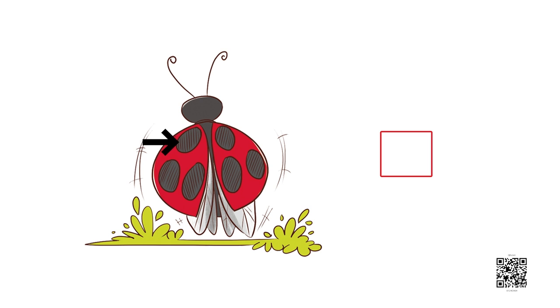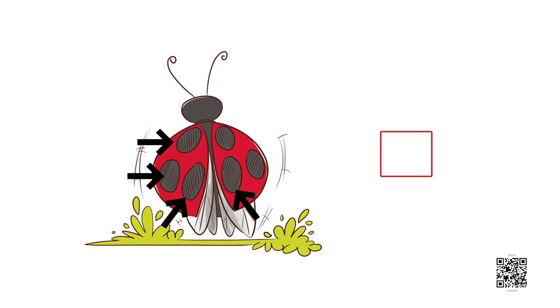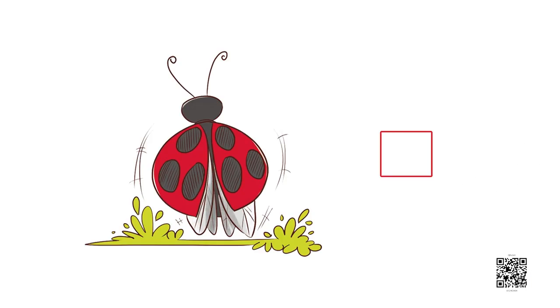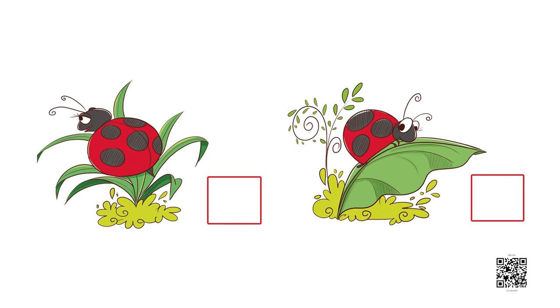And what about the second one? One, two, three, four, five, six — she has six dots. Amazing. So we write six here in the box. Similarly, we have a few more ladybugs for our friends. Arnav's friends will do these two ladybugs and count the dots on them.